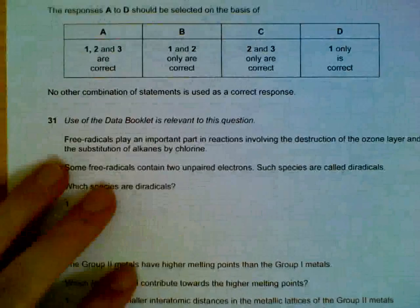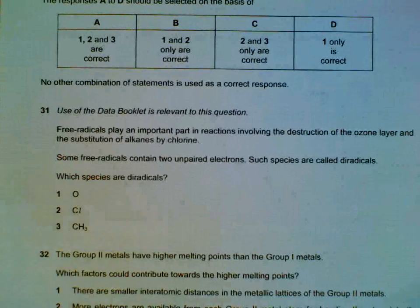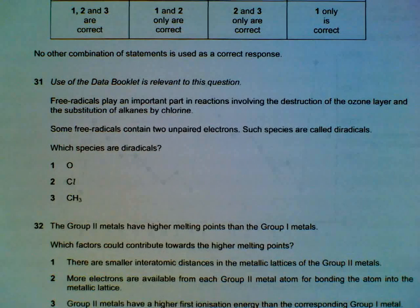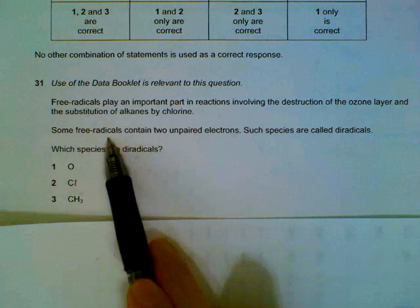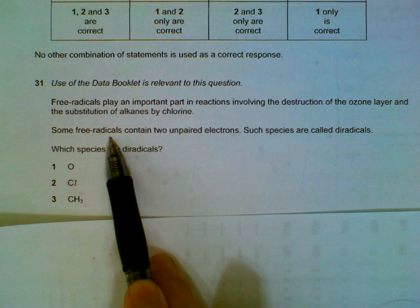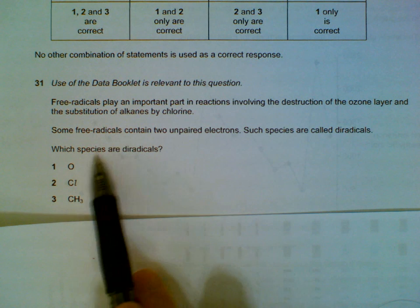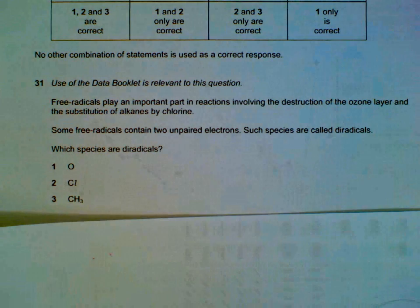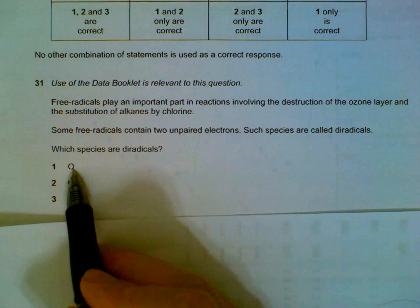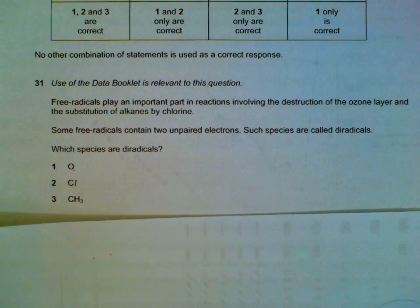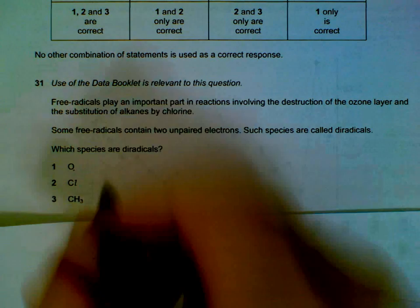Question 31: We have three species and they say that free radicals contain two unpaired electrons and they are called diradicals, so they're asking which of them are diradicals. It might be easier if we just focus on the outer electrons for the atoms.